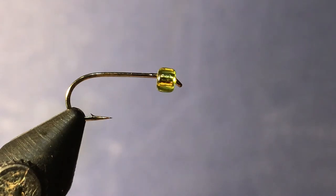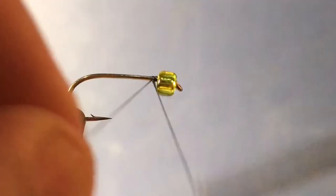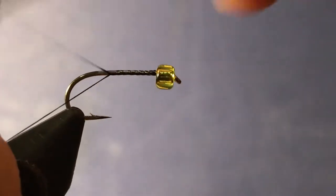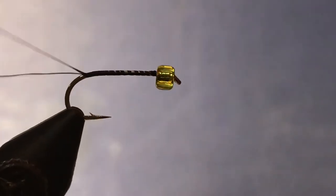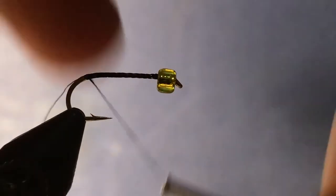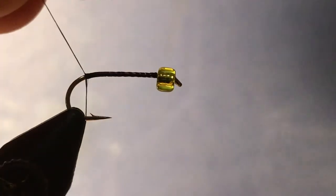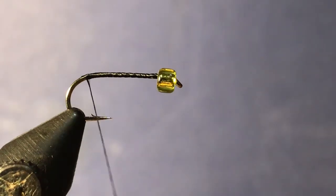Now this is a really simple pattern so we won't take too long. I just wrap a basic thread base. Go down to the bend of the hook. Doesn't matter if it's a bit rough. I'm just going for speed and simplicity here. Okay that's tied that in.